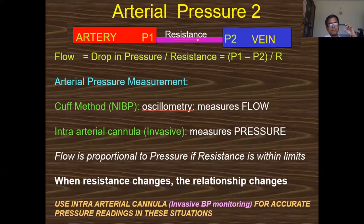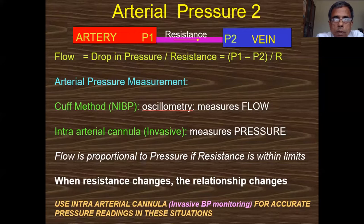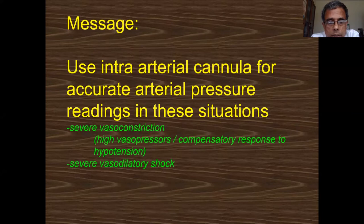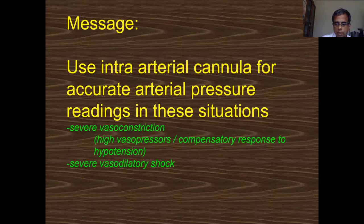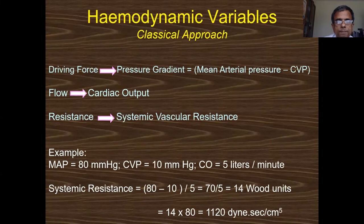Regarding arterial blood pressure: both non-invasive and invasive methods correspond in many situations but not all. If there is severe vasoconstriction or significant peripheral vasodilation, they will not correspond. In those cases, use an intra-arterial cannula for accurate blood pressure readings. Do not trust non-invasive BP in severe vasoconstriction or severe vasodilatory shock — it may give a wrong reading.